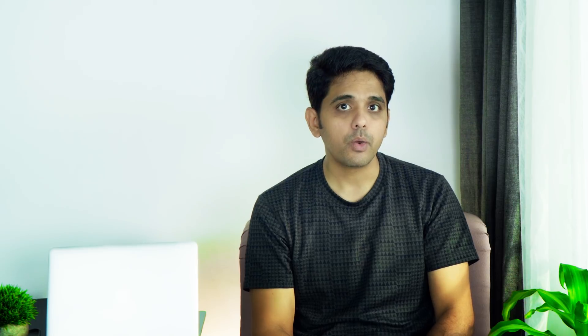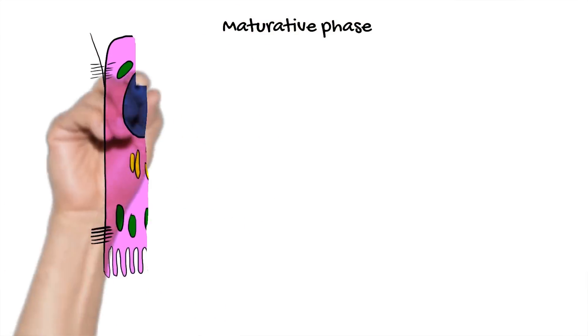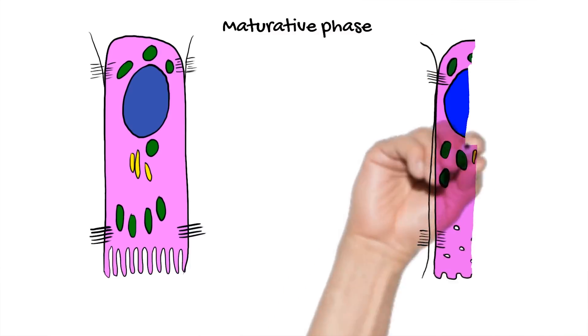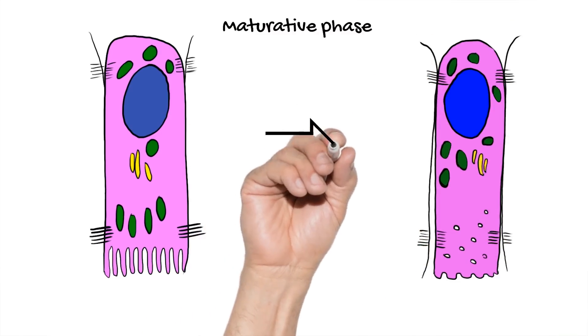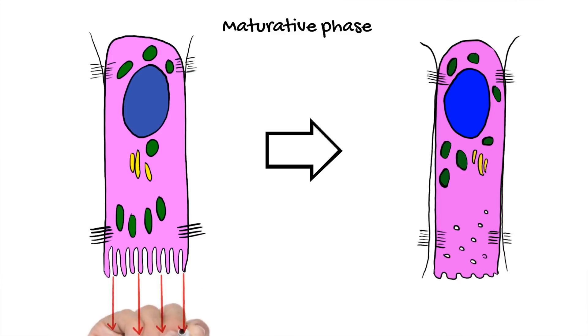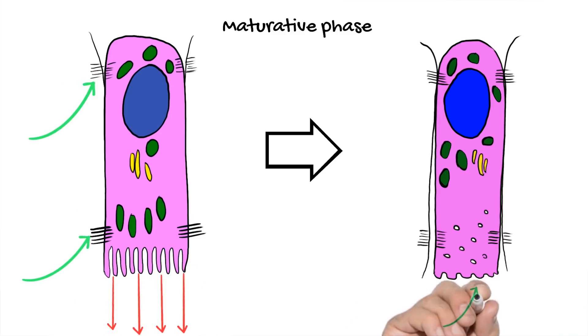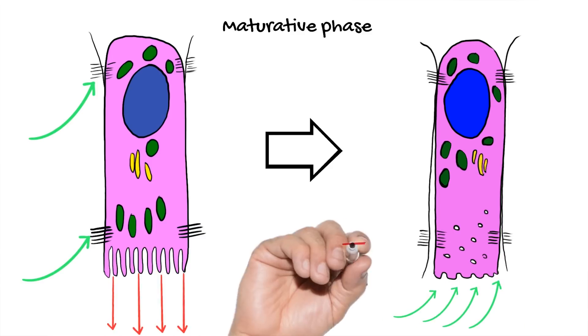During maturation, the ameloblasts undergo a dramatic change called modulation, where they show alternate rough and smooth distal ends that help mature the enamel matrix. Each cycle of rough and smoothened ameloblasts lasts about eight hours, giving three cycles in a day. The rough-ended ameloblasts have a tight distal junction, and the smoothened ameloblasts have a leaky distal junction. The rough-ended cells have many degrading enzymes released to break down the organic matrix into smaller peptide fragments, which are later taken up by the smooth-ended ameloblasts through their leaky distal junctions.